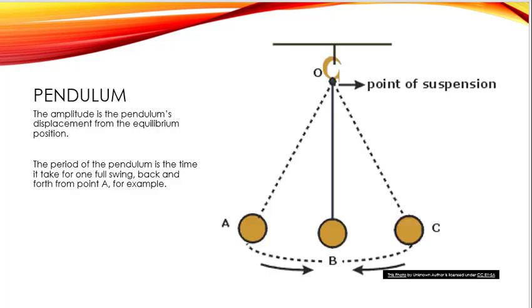So another example of simple harmonic motion is a pendulum. And in this case, we need to kind of redefine the amplitude. And it's the distance that the pendulum bob is displaced from equilibrium. So equilibrium is when it's hanging straight down. And when you pull it over to the side, you've caused it to be displaced. And that's going to be the amplitude.